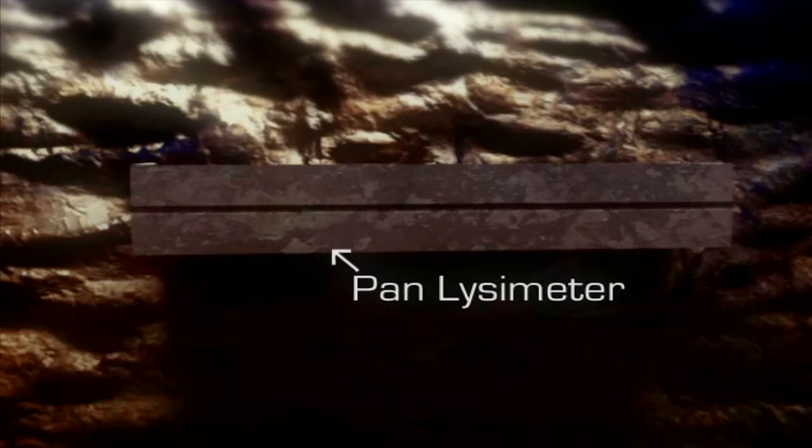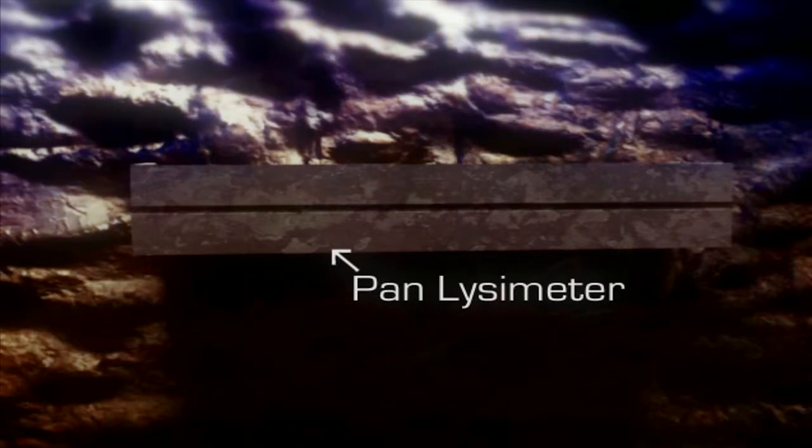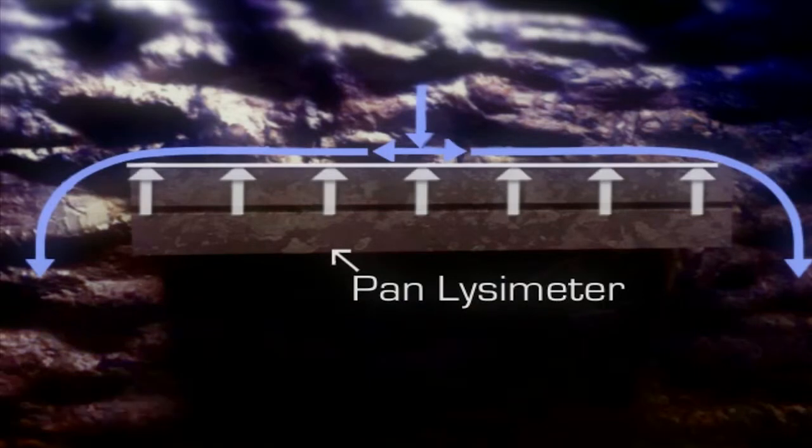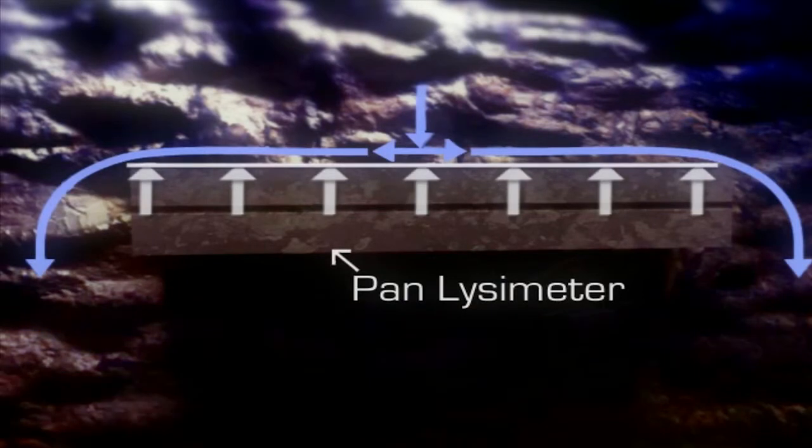When you install a pan lysimeter in the soil, it creates this boundary layer that is under zero tension. In unsaturated conditions, the water in the soil is being held under tension. Water flow through soil is from areas of low tension to high tension.